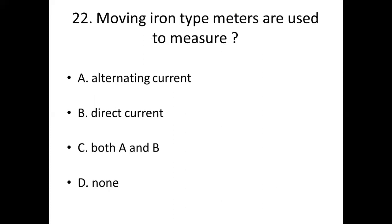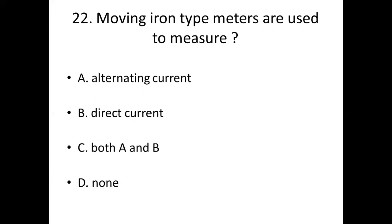22nd bit: Moving iron type meters are used to measure dash. Option A: Alternating Current. Option B: Direct Current. Option C: Both A and B. Option D: None. Answer — Option C: Both A and B.